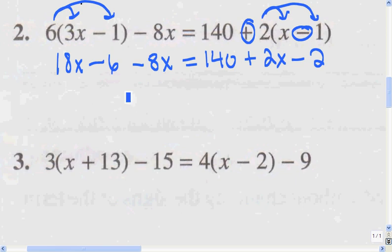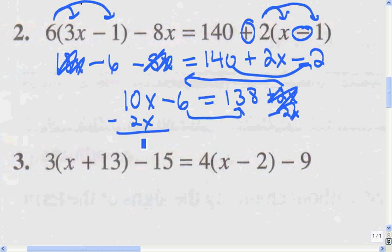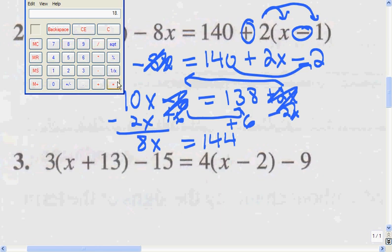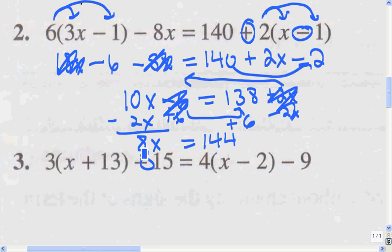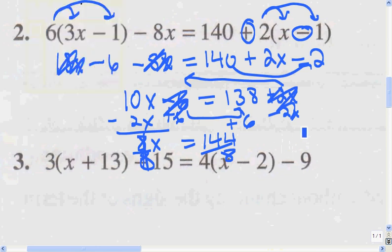18x minus 8x is 10x minus 6. I can combine the 140 and the negative 2, which gives me 138 plus 2x. Now I transpose — I'm going to move the 2x over and subtract 2x from both sides, which cancels out, giving me 8x. I add 6 to both sides, which gives me 144. Then 144 divided by 8 equals 18. So x equals 18.